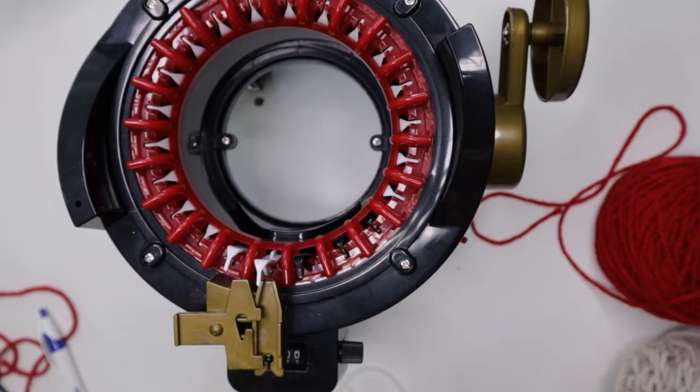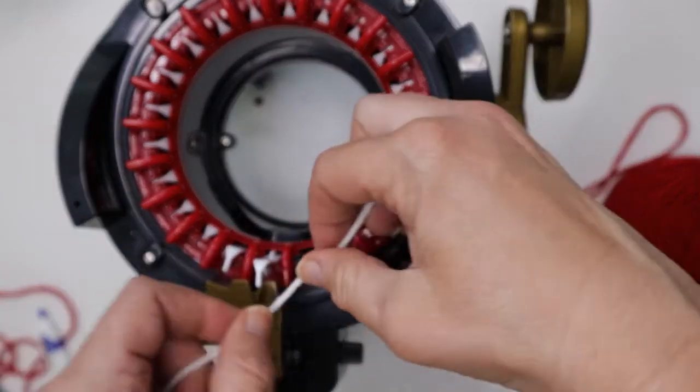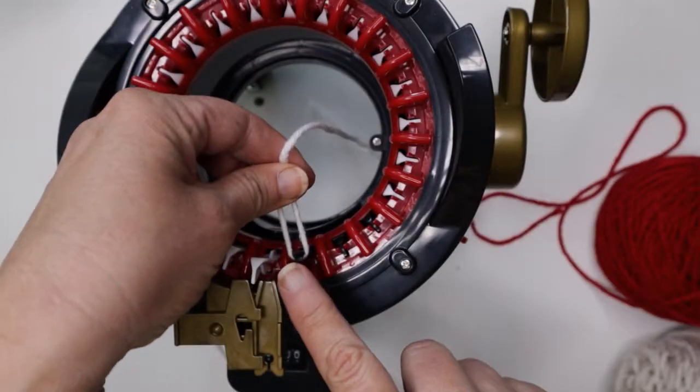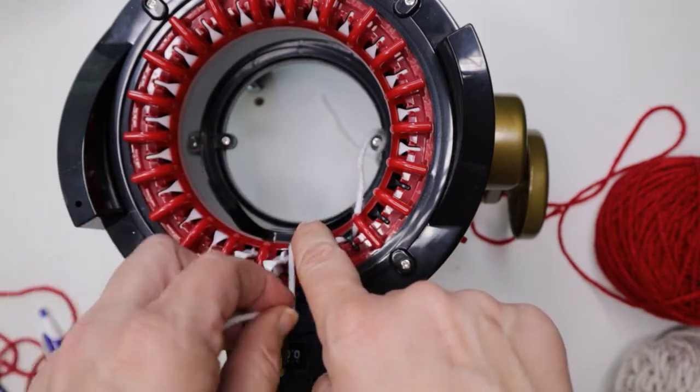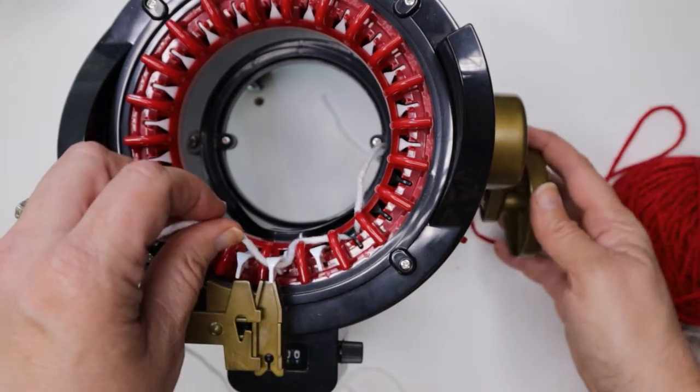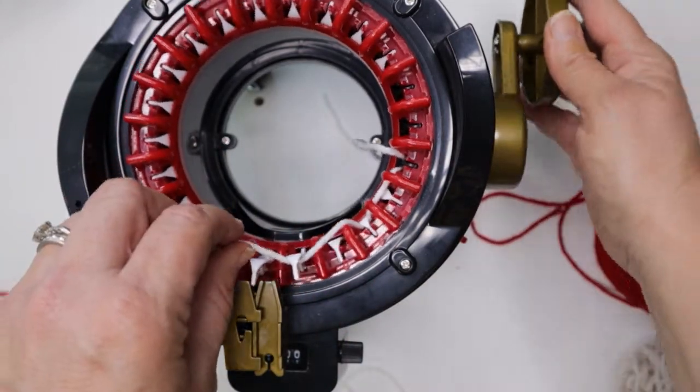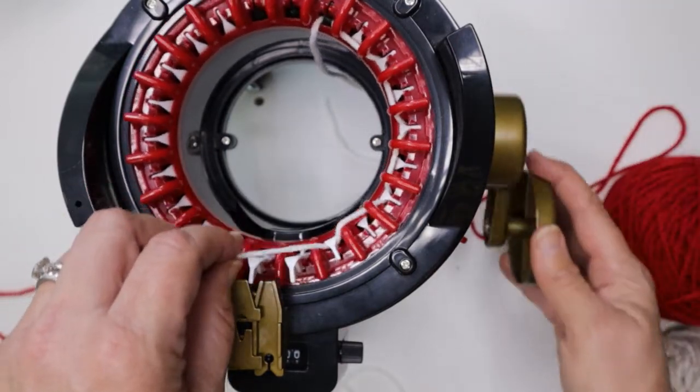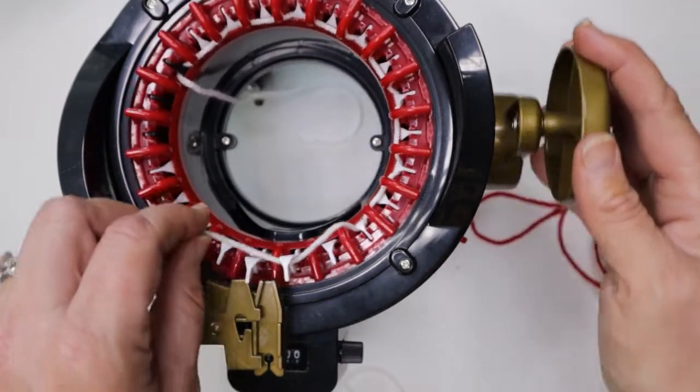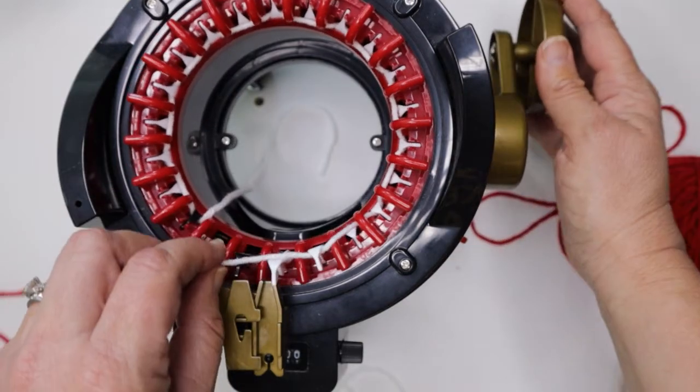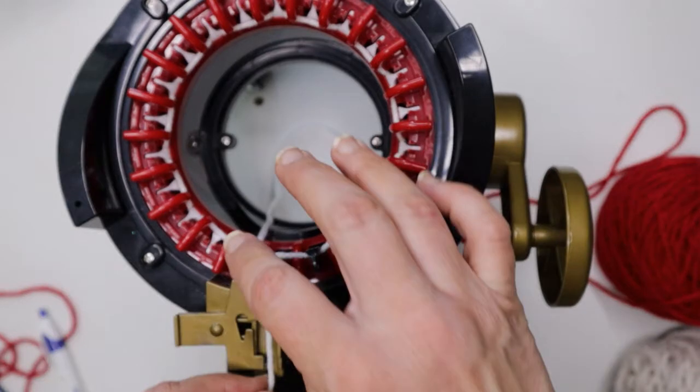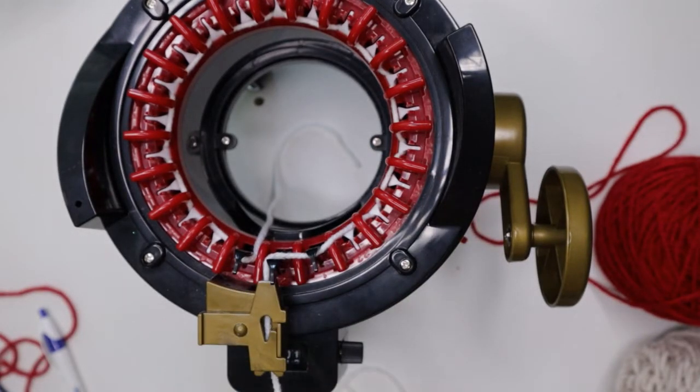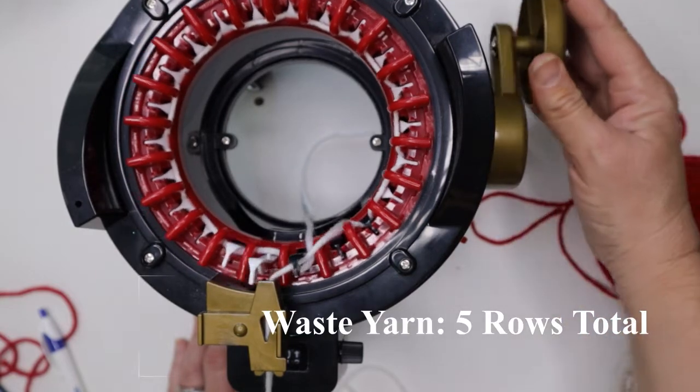To start the scarf we're going to take our waste yarn. We're going to cast on. I like to start with the first black pen and then go behind the next one and then in front of the one after, behind and front, behind, all the way around. Make sure to put the yarn in your tension. Then we're going to do four more rows of this waste yarn.